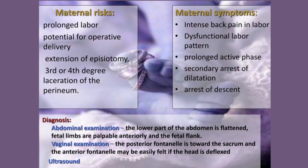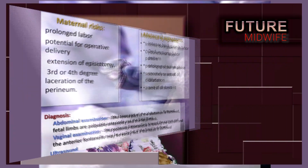Let's discuss the diagnosis of occipital posterior position. On abdominal examination, the lower part of the abdomen is flattened, fetal limbs are palpable anteriorly, and the fetal flank is visible. On vaginal examination, the posterior fontanelle is towards the sacrum and the anterior fontanelle may be easily felt if the head is deflexed. Ultrasound scanning can be used to confirm the occipital posterior position.